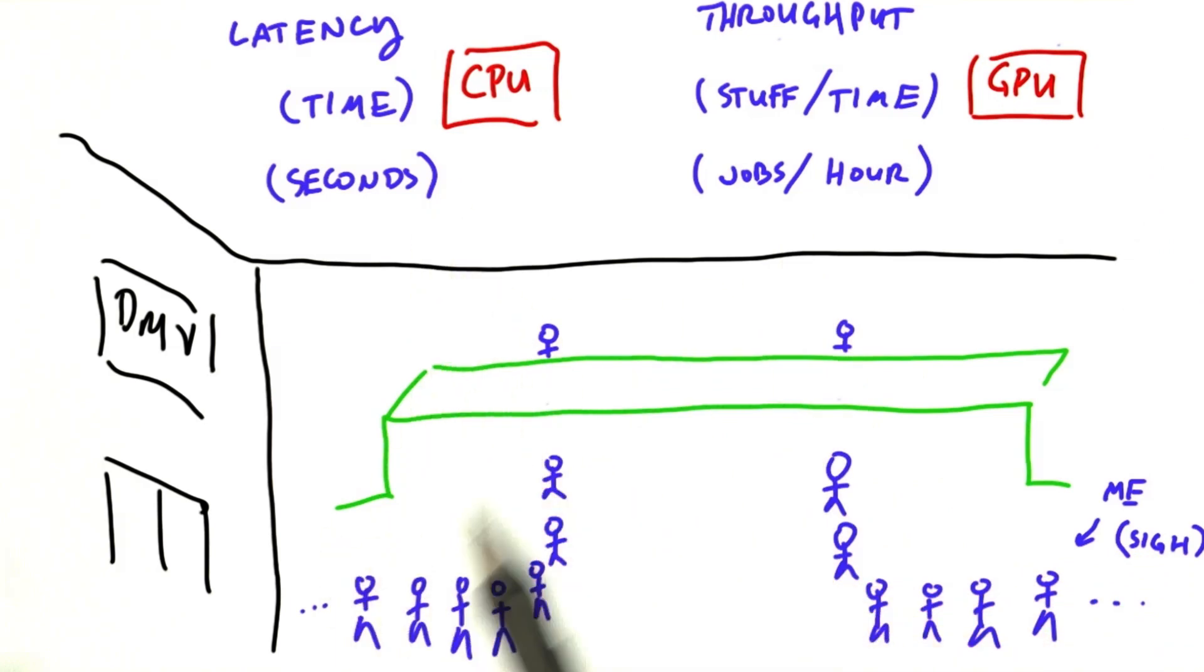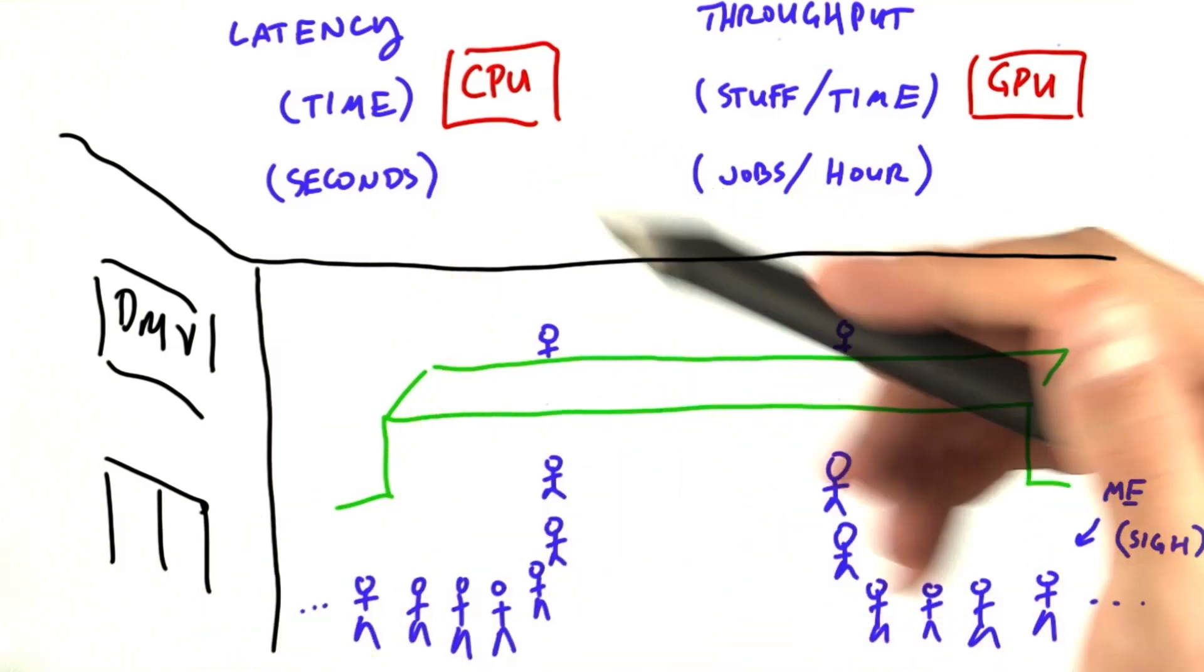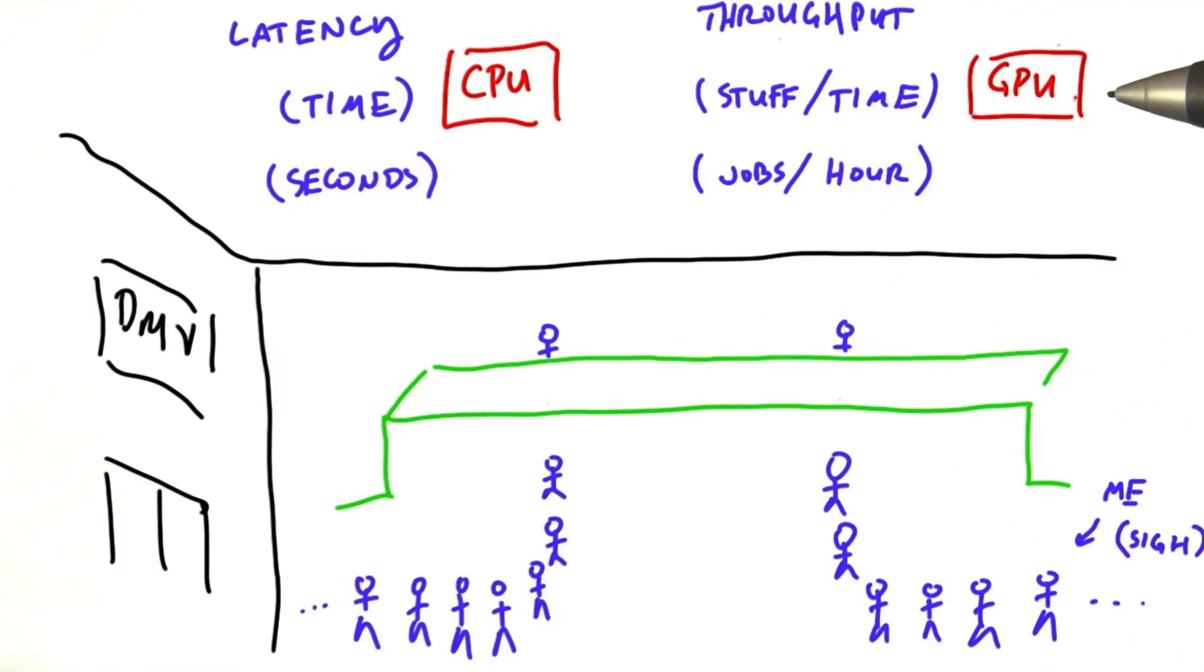Traditional CPUs optimize for latency. They try to minimize the time elapsed of one particular task. GPUs instead choose to optimize for throughput. This is a fundamentally different approach, and one that is aligned with technical trends in the computer industry.